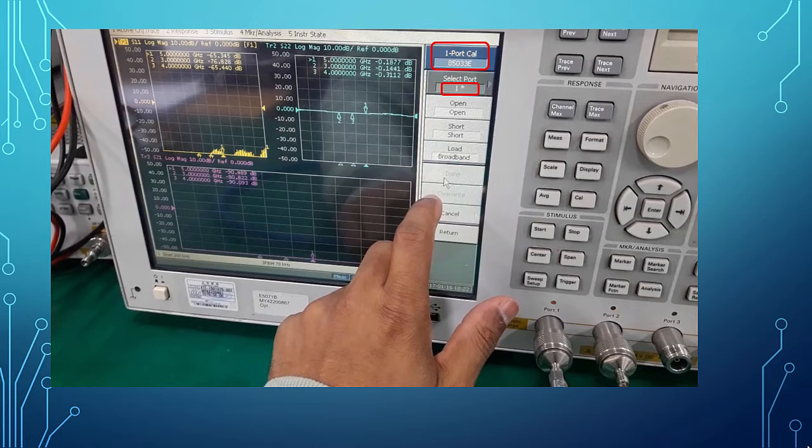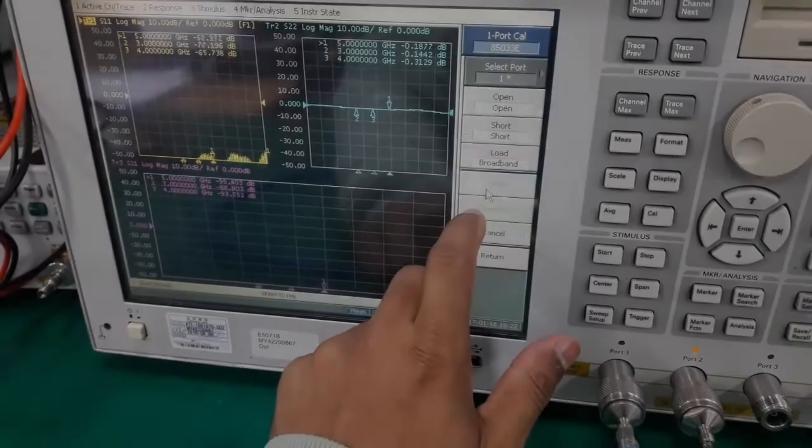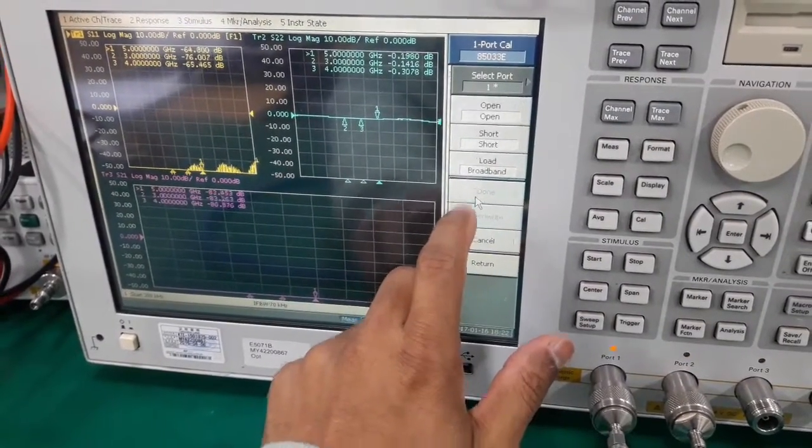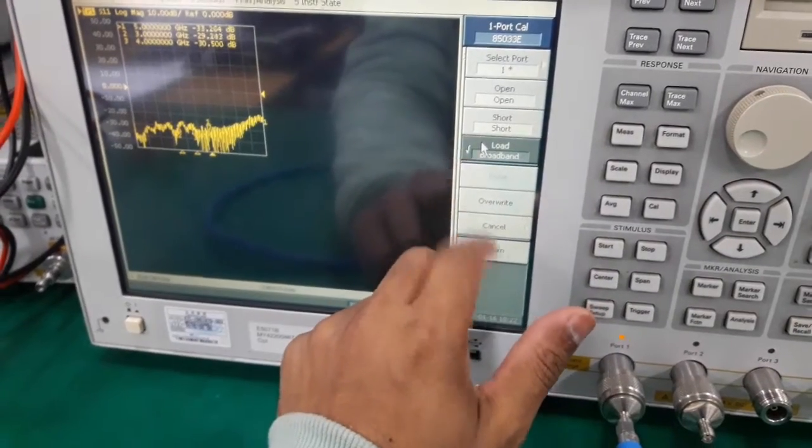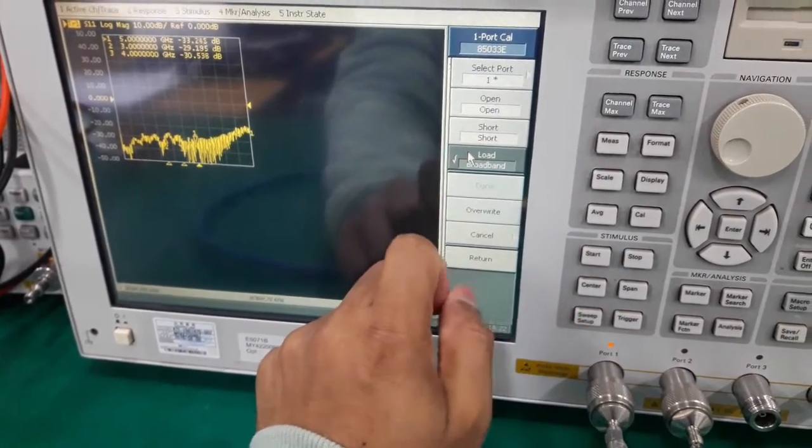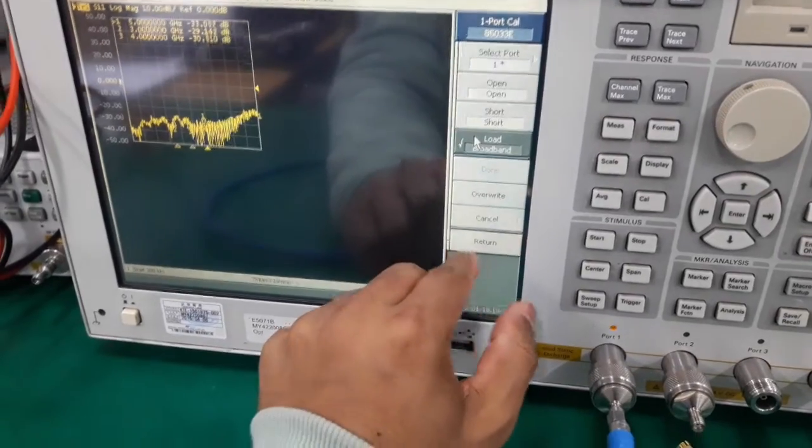After that, there are three options. Since the port 1 is connected to the load terminal, select load and a check mark appears. That means we are done with the load calibration.